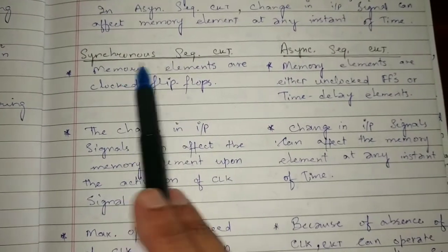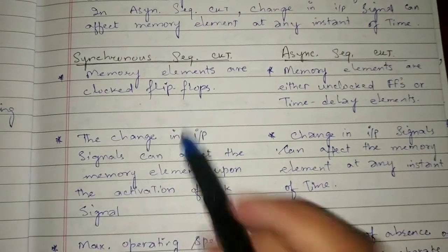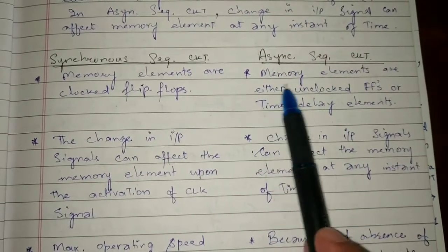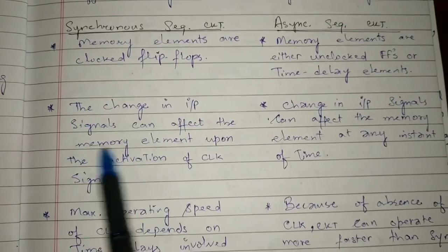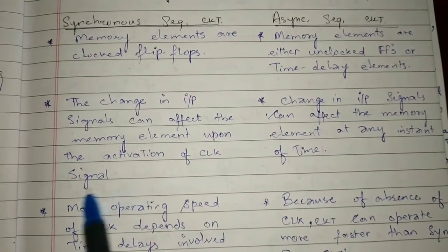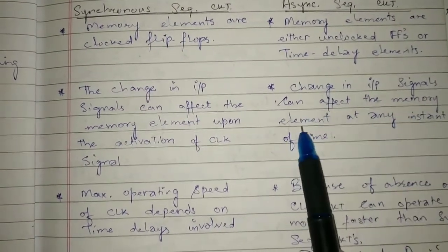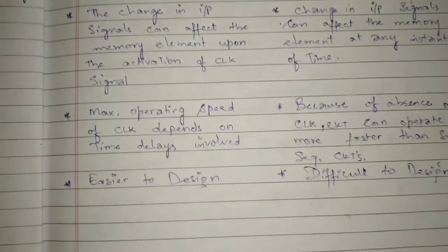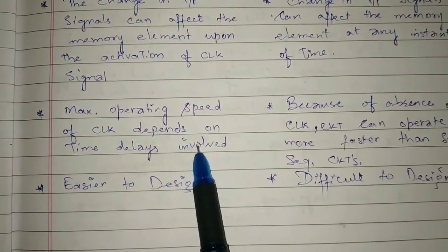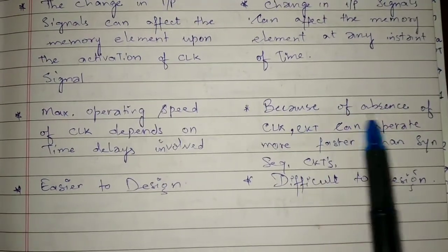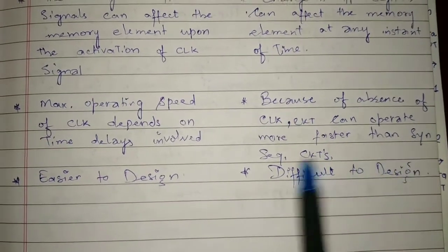Now let's distinguish between synchronous and asynchronous sequential circuits. In synchronous, memory elements are clocked flip-flops and a clock is present. In asynchronous sequential circuits, memory elements are either unclocked flip-flops or time-delay elements. In synchronous, input signal changes affect memory only upon clock activation; in asynchronous, changes can happen at any instant. Because of the absence of a clock, asynchronous circuits can operate faster than synchronous ones. However, synchronous sequential circuits are easier to design while asynchronous are more difficult.